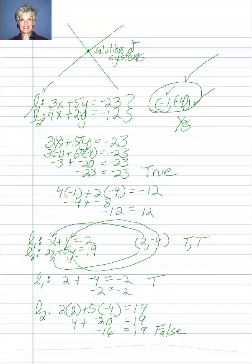What that means is that the point 2 comma negative 4 is on line 1, but it's not on line 2. So it cannot be the solution of the system.